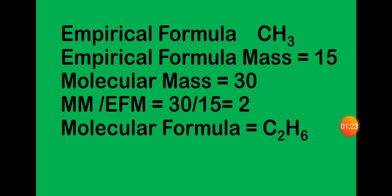The molecular mass is 30, which is vapor density doubled. Molecular mass divided by empirical formula mass: 30 divided by 15 equals 2. So the empirical formula CH₃ multiplied by 2 gives the molecular formula C₂H₆.